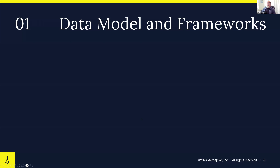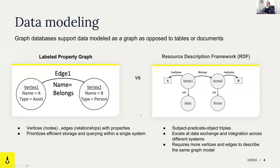Let's talk about data models. We've selected two of the more common ones: label property graph and resource description framework, RDF. As opposed to the relational data model where you have tables, views, and joins and every vendor uses the same model, in graph things are a little different because there are two variants of how people choose to model graphs.